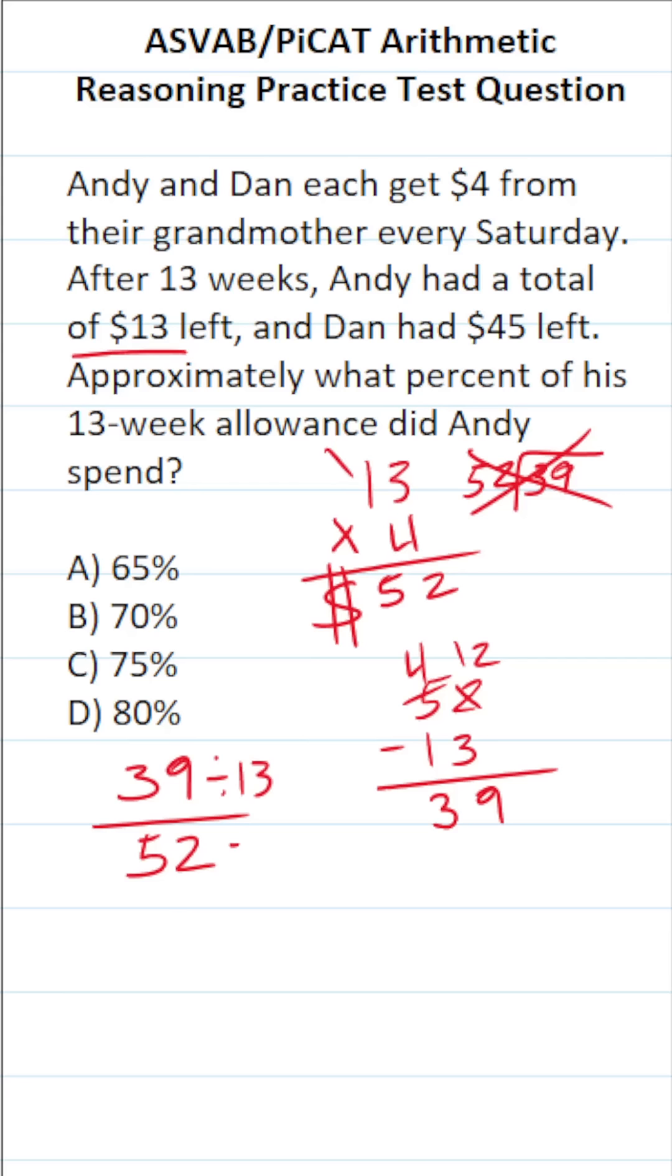you should recognize that 39 and 52 have a common factor of 13. 39 divided by 13 is 3. 52 divided by 13 is 4. You should know that the decimal equivalent of 3 fourths is 0.75, which is the same thing as 75%. In other words, Andy spent 75% of the allowance that was given to him over 13 weeks.